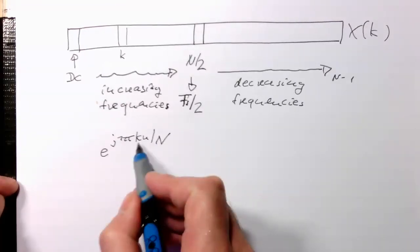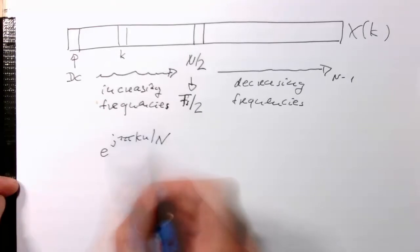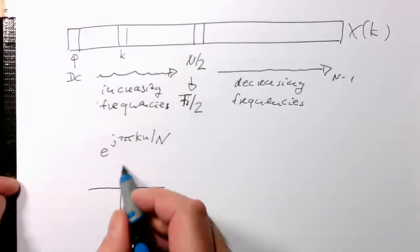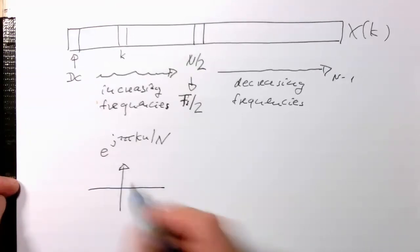Depending on the k, this rotation becomes faster and faster. Remember, for low frequencies this goes around only once.